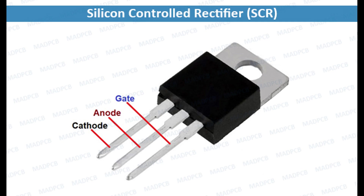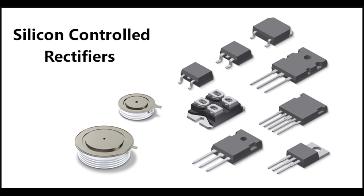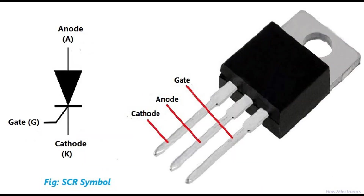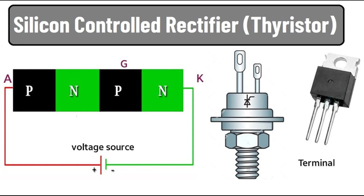Switching characteristics: Turn-on time is the time interval from the application of the gate pulse to the instant the SCR starts conducting fully. Turn-off time is the time required for the SCR to switch from the conducting state to the blocking state after the anode current falls below the holding current. Key parameters: Latching current (IL) is the minimum anode current required to maintain the SCR in the on state immediately after it has been turned on and the gate current has been removed. Holding current (IH) is the minimum anode current required to keep the SCR in the on state. If the anode current falls below this value, the SCR will turn off.